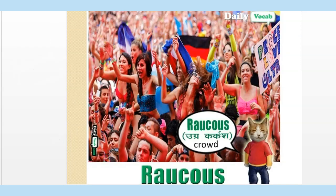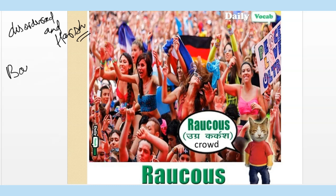The next word is 'raucous'. Pay attention to the word and the picture. Raucous means something which is very disordered or harsh — anything which is very harsh and disordered. We can also say that thing is 'boisterous'.